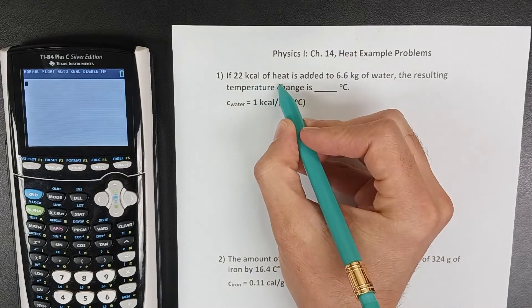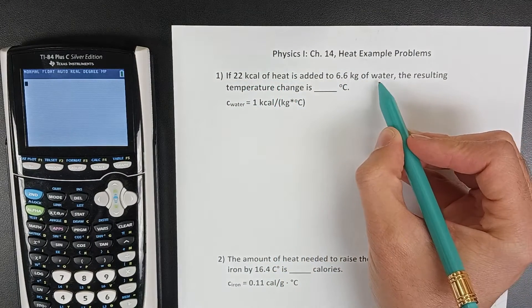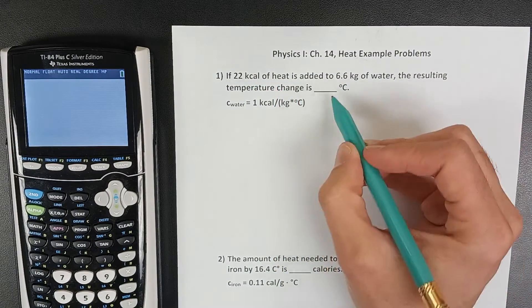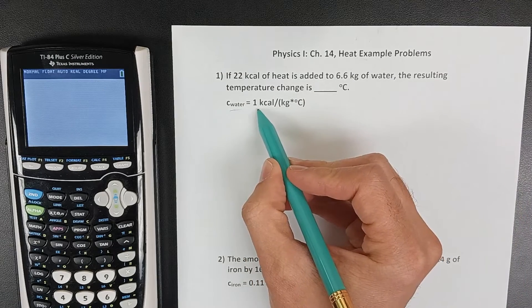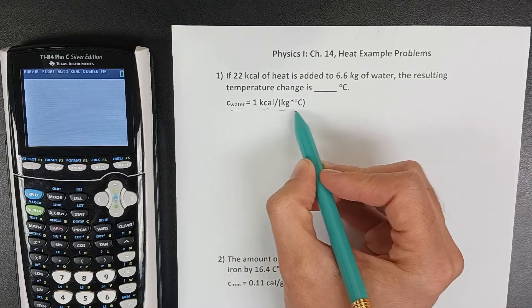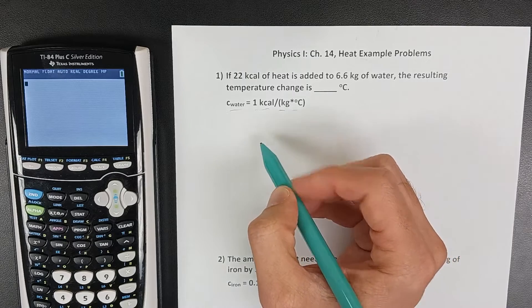In this problem, we're adding heat to a container of water and we want to find the temperature change. We're given the specific heat for water, measured here as one kilocalorie per kilogram degree Celsius.